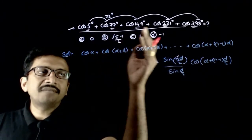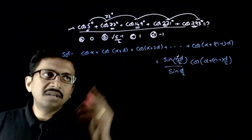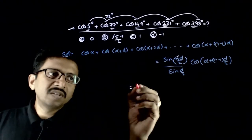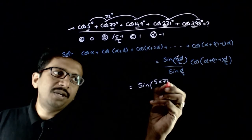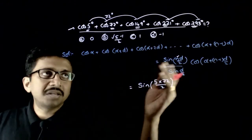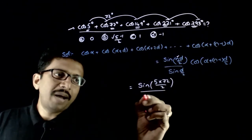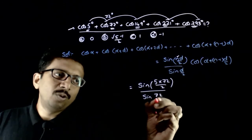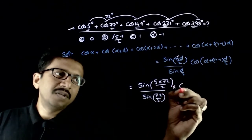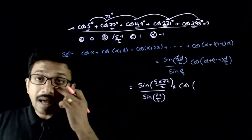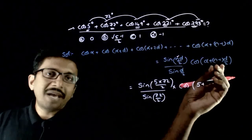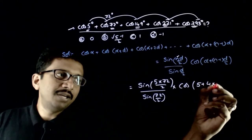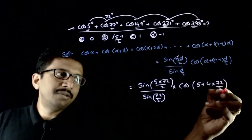In this question, you clearly have 5 terms. This equals sin(5 times 72 by 2) over sin(72 by 2) times cos(alpha plus n-1 times d by 2). Alpha is the first angle which is 5, plus n minus 1 (n is 5, minus 1 is 4) times 72 by 2.